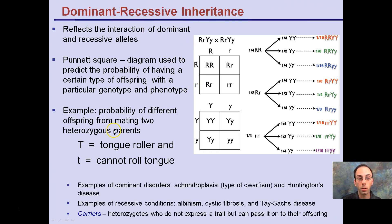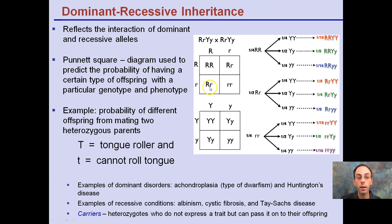In recessive inheritance, there's something called carriers. In our Punnett squares, a carrier is represented by a heterozygous individual — the recessive gene is not going to be expressed. It's carried, it's present there, and it may show up in the offspring but will not show up in that particular individual.